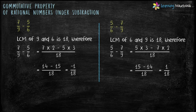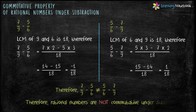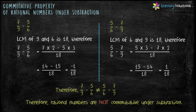So students, in both the cases we get different answers. Therefore, we can say 7 by 9 minus 5 by 6 is not equal to 5 by 6 minus 7 by 9. And hence, rational numbers are not commutative under subtraction.